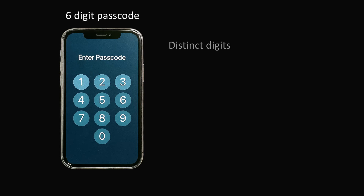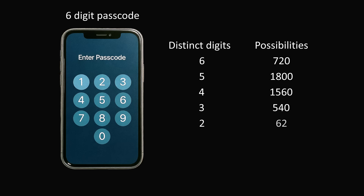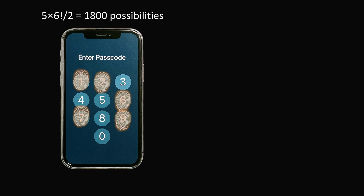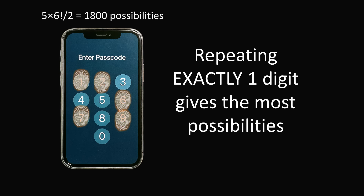So we can now summarize our results. If we have a six-digit passcode, we can see the most number of possibilities corresponds to having five distinct digits. In this table, five distinct digits is the absolute most number of possibilities. Having four distinct digits is not far behind, but it is still better than having six distinct digits. To summarize: when you have a six-digit passcode, repeating exactly one digit gives the most number of possibilities.